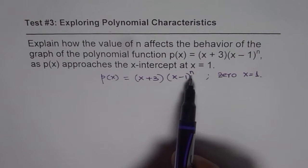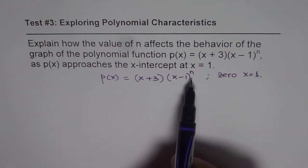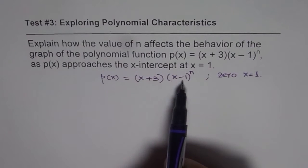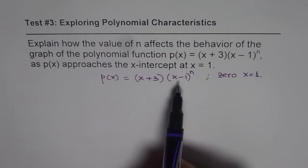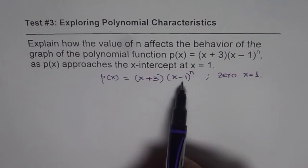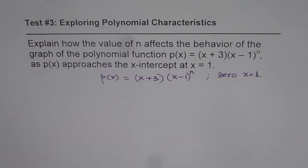As the degree n changes from 1, 2, 3 to any natural number, the behavior of the polynomial function at this x-intercept changes, and that is what we need to describe. I hope you understand the question. Now let us see how to describe it so that we get full marks.